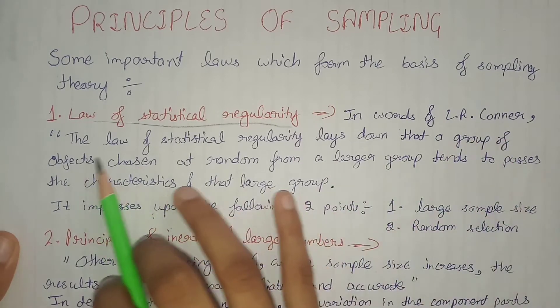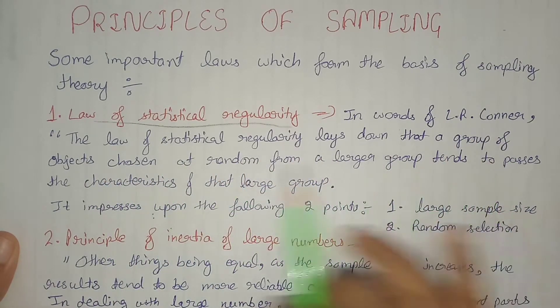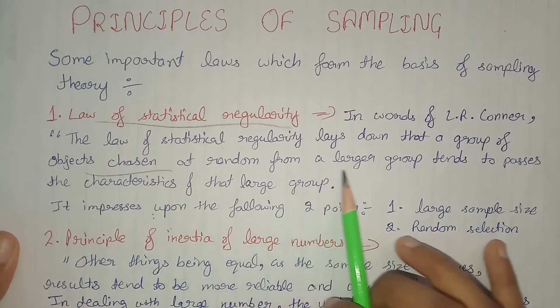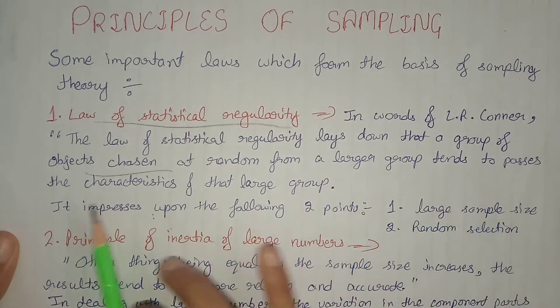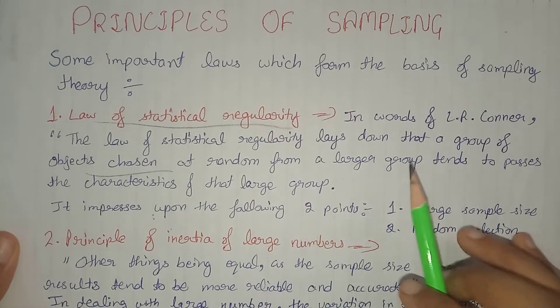In words of L.R. Corner, the law of statistical regularity lays down that a group of objects chosen at random from a larger group tends to possess the characteristics of that large group.